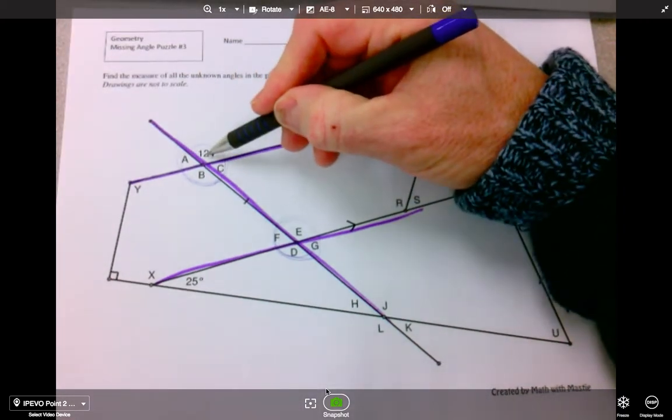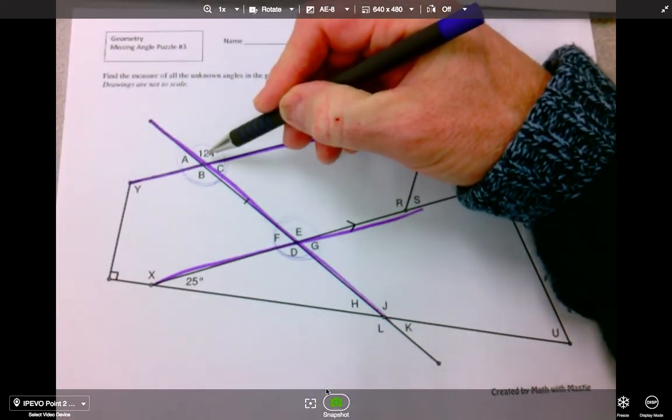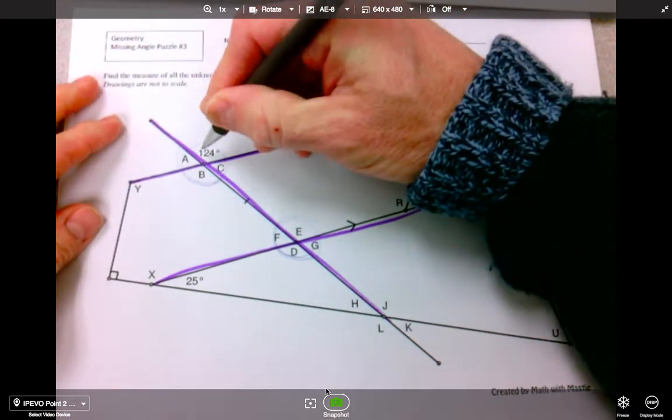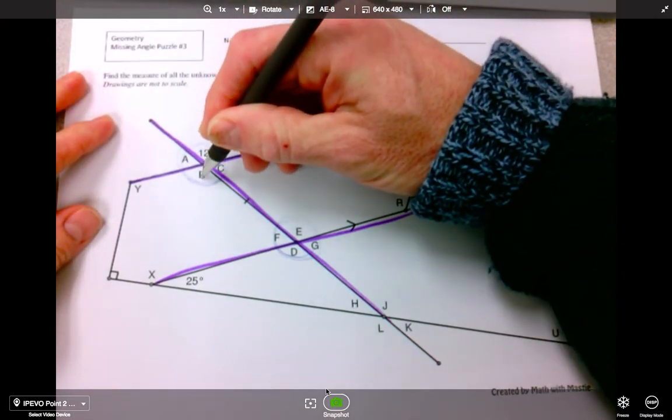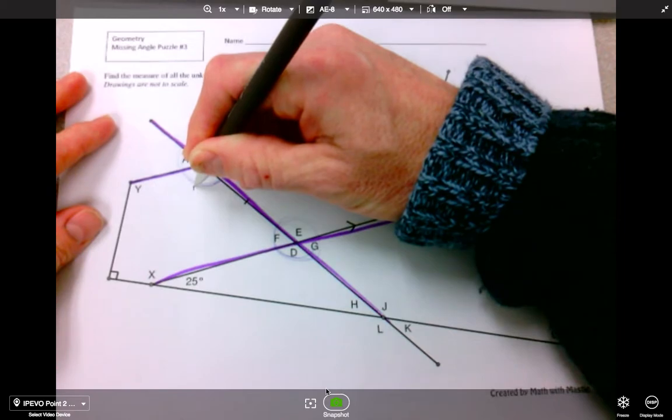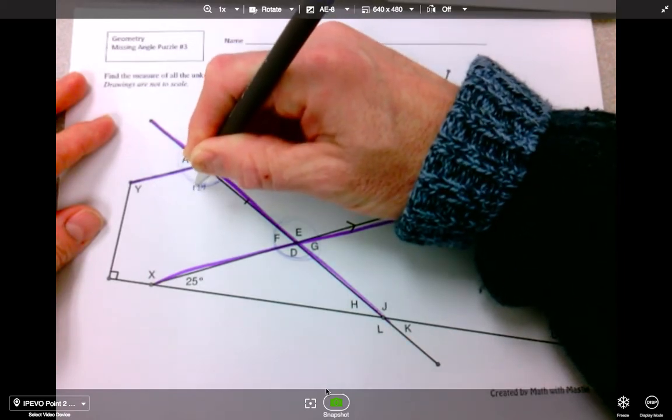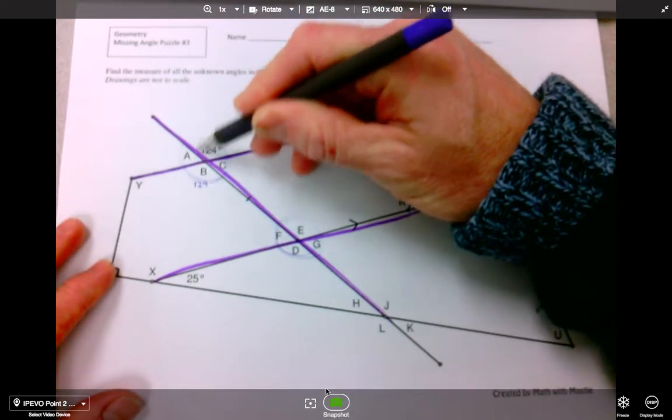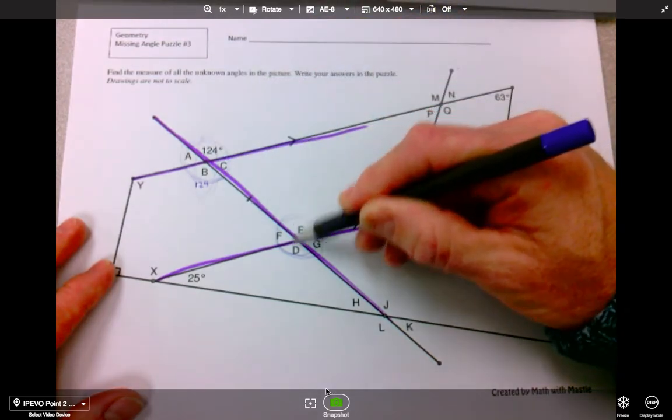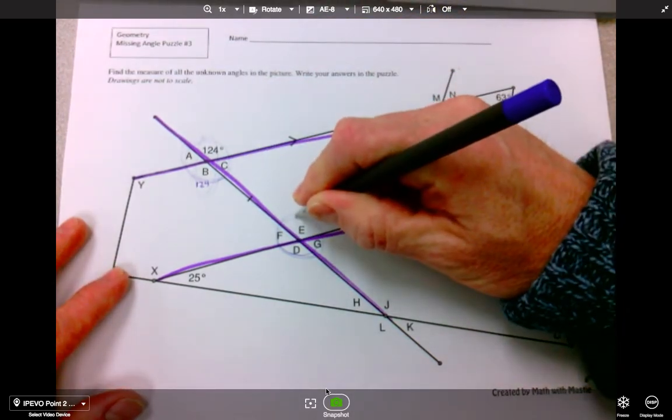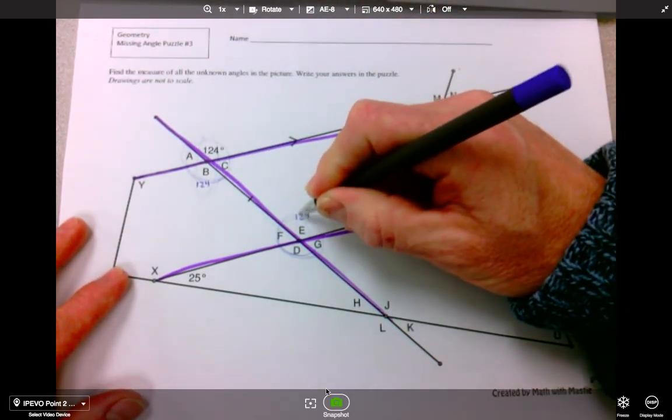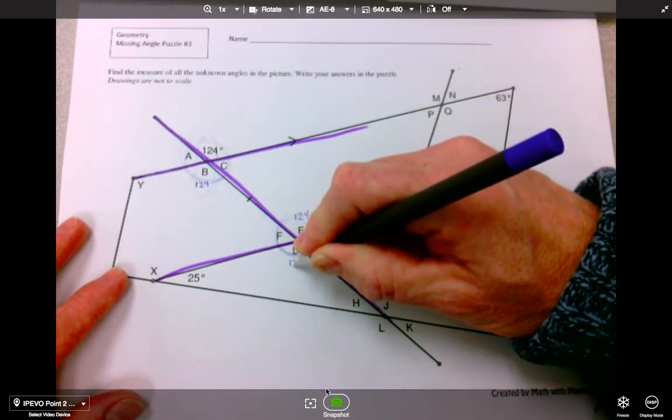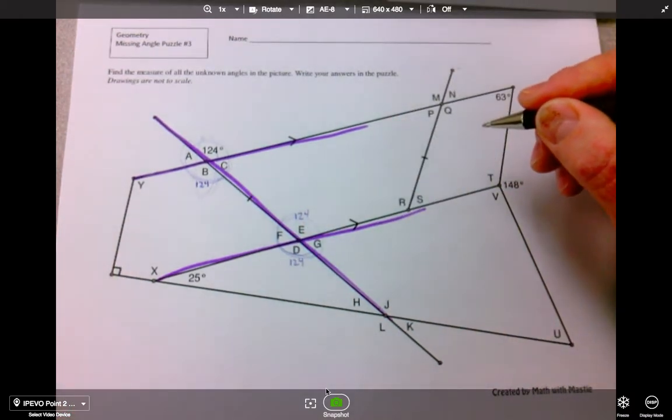So I know that this is 124, and I know by rule that the opposite is also 124. So I can actually mirror this here. So let me do that. This is 124. The opposite here will be 124. So that's helpful.